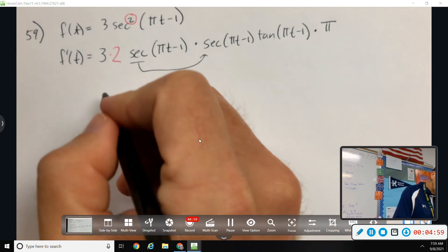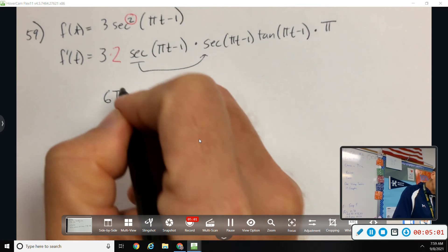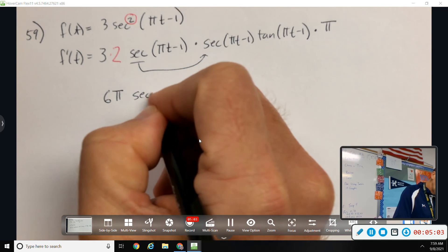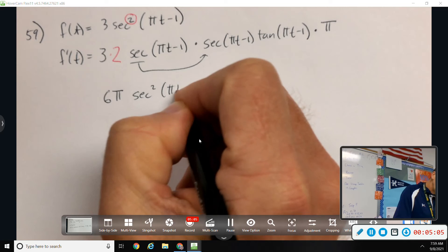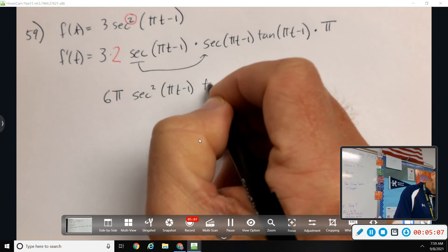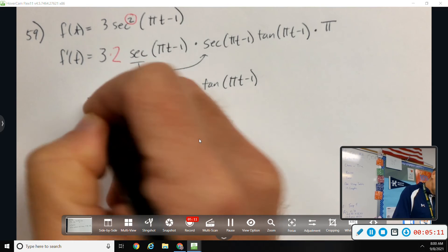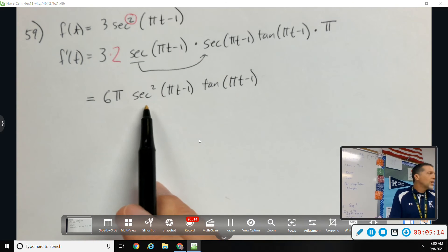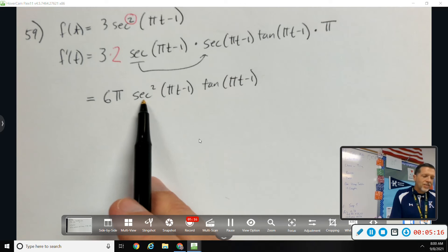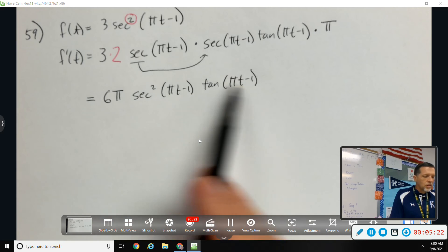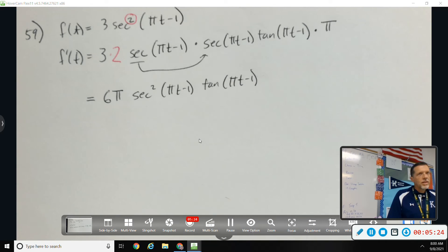This one's not awful to simplify. 6 pi secant squared times tangent. Yeah, and then, is there some trig identity that has secant squared in it? Yes. Do I remember what it is and want to mess with it? No. So, this would be good enough. I don't know what CalcChat did.